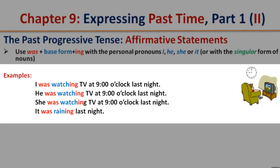I was watching TV at 9 o'clock last night. The base form 'watch' plus '-ing', personal pronoun 'I', and then 'was'. He was watching TV at 9 o'clock last night. She was watching TV at 9 o'clock last night. It was raining last night.